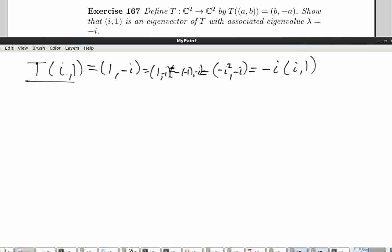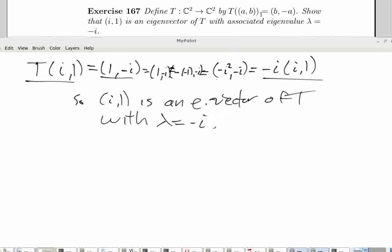So in other words, t of i1 is equal to 1, negative i, which ends up being equal to that. So i1 is an eigenvector of t with associated eigenvalue lambda equals negative i. We're done.